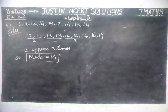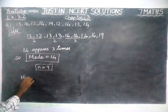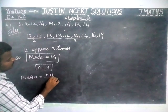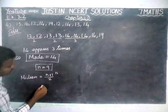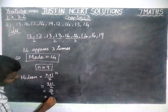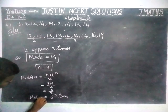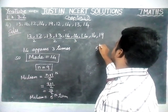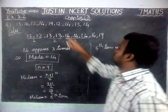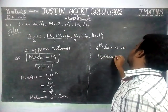Now we are going to find the median. N is equal to 9, the total number of observations. To find the median, since N is an odd number, the median equals the (N+1)/2 th term, which is (9+1)/2 = 10/2 = 5th term. Counting 1, 2, 3, 4, 5 — the 5th term is 14. So median is equal to 14.